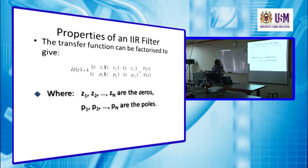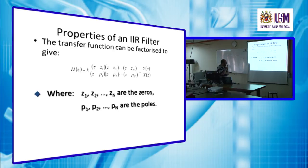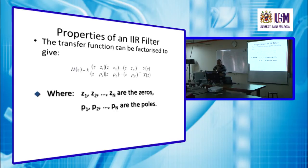The factorized form continues as (z minus z1)(z minus z2)... multiplied by (z minus b1)(z minus b2)..., which equals Y(z) over X(z). Here z1, z2, ..., zN are the zeros, which are the roots of the numerator, while b1, b2, ..., bN are the poles, which are the roots of the denominator.